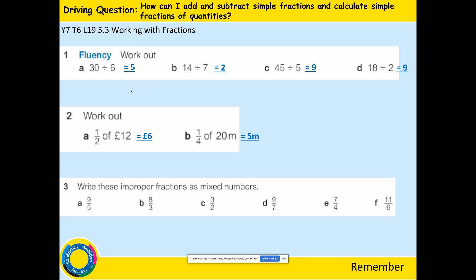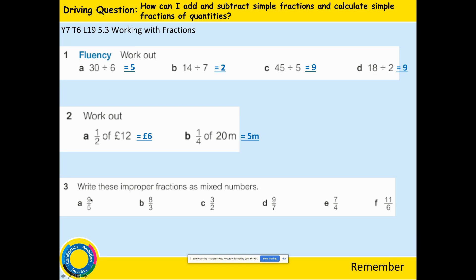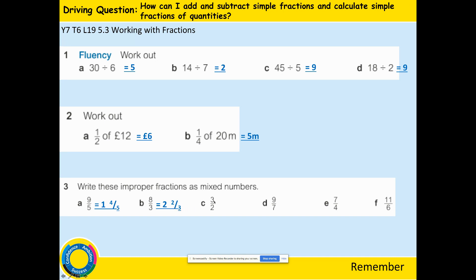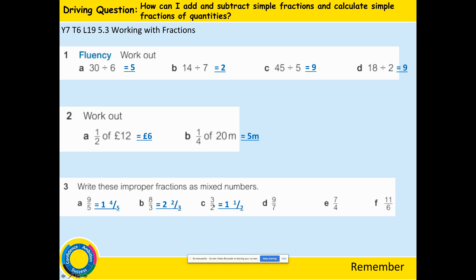Write these improper fractions as mixed numbers. How many times does 5 go into 9? It goes one time with a remainder of 4, so there are 4 fifths. Remember the denominator doesn't change. 3 into 8 goes 2 times with a remainder of 2, so it's 2 and 2 thirds. 2 into 3 is 1 with 1 left over, so 1 and 1 half — because 2 is the denominator and it stays the same.